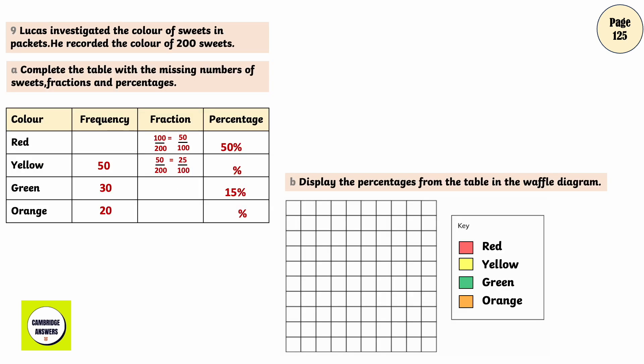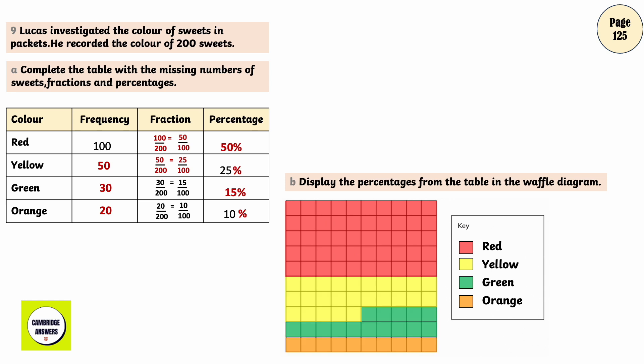Lucas investigated the color of sweets in packets. He recorded the color of 200 sweets. Complete the table with the missing numbers of sweets, fractions and percentage. 100, 25%, 15 upon 100, 10 upon 100, 10%. Display the percentages from the table in the waffle diagram. Red, Yellow, Green, Orange.